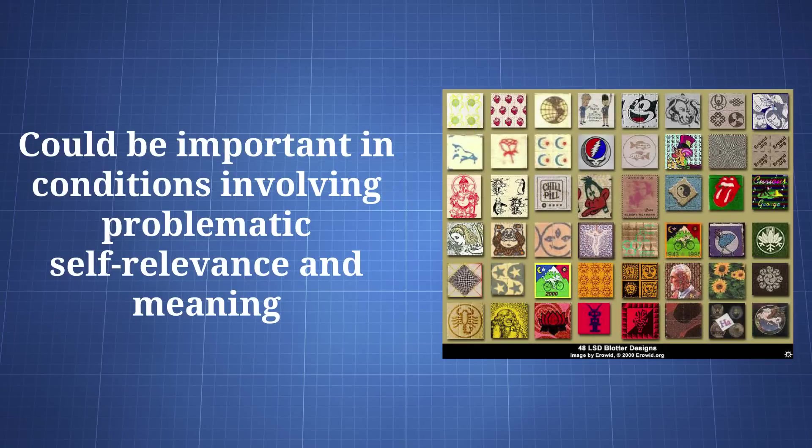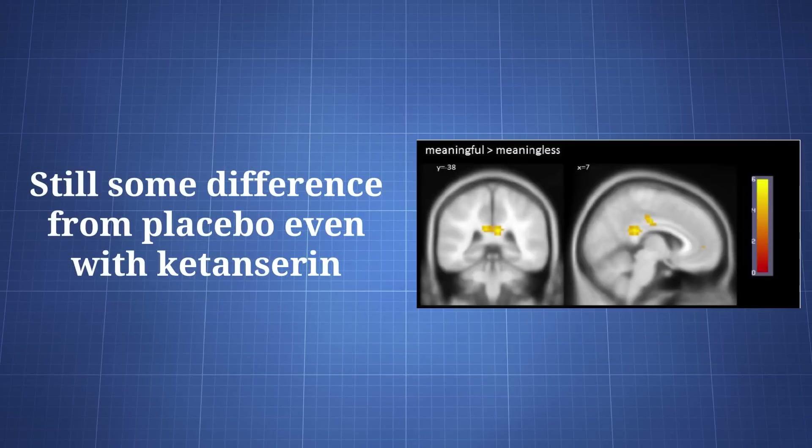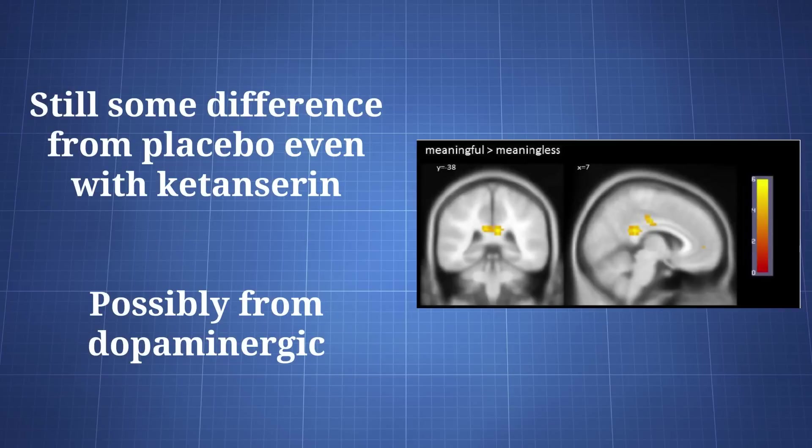It also suggests 2A may play a role in psychiatric illnesses, such as schizophrenia, that are associated with problematic self-relevance and personal meaning mechanisms. One of the few things not blocked by ketanserin was a greater BOLD signal in the posterior cingulate cortex relative to the placebo condition. We don't know why this was the case. One possibility is that LSD's dopaminergic effects were responsible.